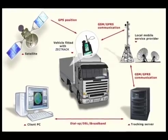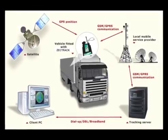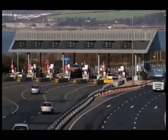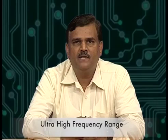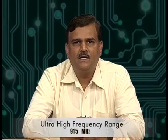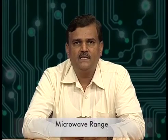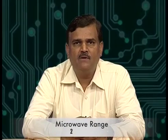The high frequency range is generally used in vehicle tracking and automated toll collection stations. The third range is the ultra high frequency range, having a frequency range of 915 MHz. It can read from longer distances and at even higher speed than the high frequency range. The fourth range is the microwave range, having a frequency of 2.45 GHz.